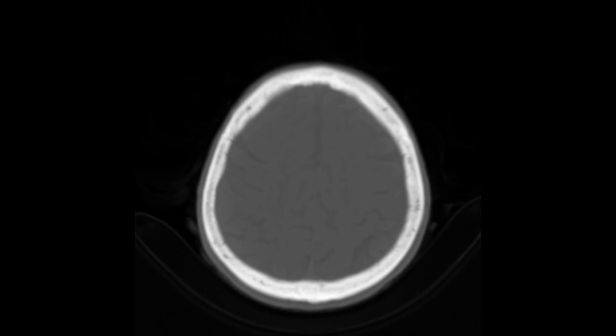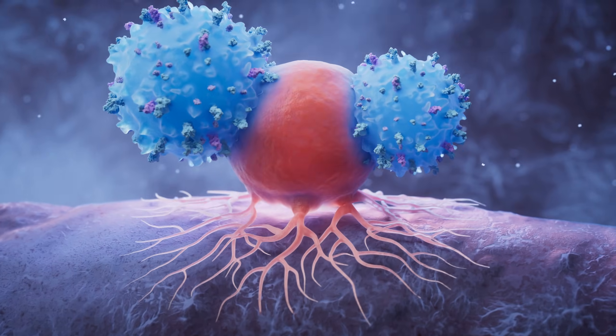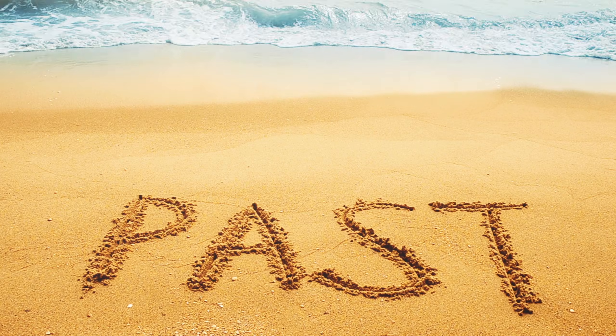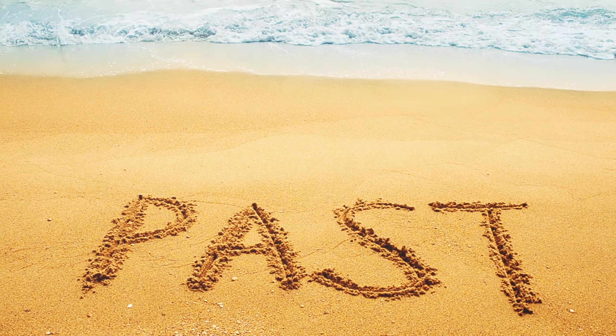When your brain is inflamed, immune cells release molecules that damage neurons. Over years, this compounds into memory problems, slower thinking, and increased risk of age-related cognitive conditions.